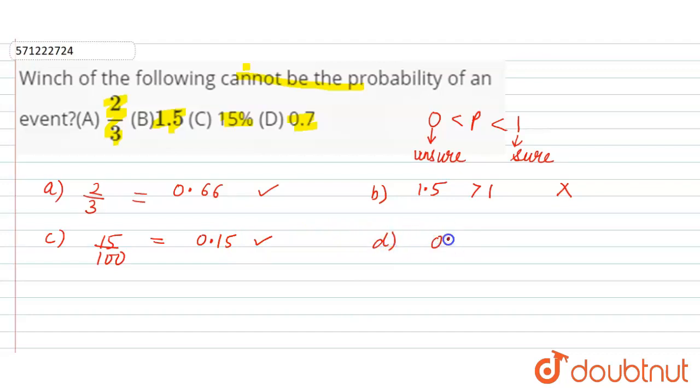Now 0.7. Again, 0.7 is lying between 0 and 1, so this can be the probability of an event.